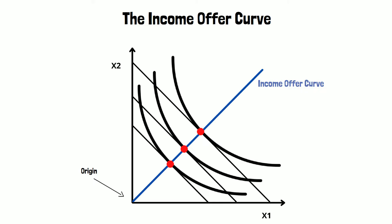The income offer curve can also have a negative slope. This means that the quantity consumed of one of the goods decreases when income increases. For this reason this specific good has to be an inferior good.